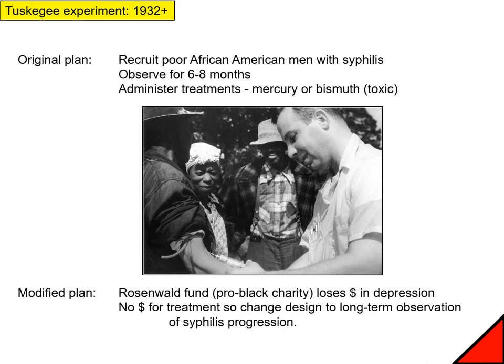Then the Depression happened. The Rosenwald Fund, a pro-Black charity conducting this experiment to find a cure for a disease that particularly affected the African-American community, ended up losing all their money in the Depression. With no money for the treatment — they couldn't afford the mercury or the bismuth — but having already recruited these people, they changed the design to a long-term observation study of syphilis progression.